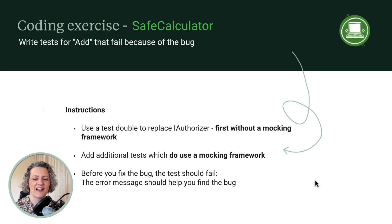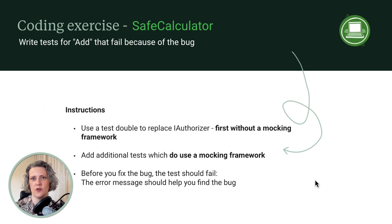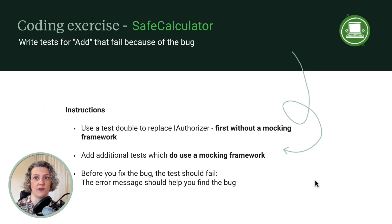Now it's your turn. I'd like you to do what I did — write some tests for SafeCalculator that fail because of the bug. To begin with, write tests like I did with a hand-coded test double. Then, using a mocking framework that you or someone on your team knows, write additional tests that do the same thing — find the same bug. With all of the tests, before you fix the bug, look at the error message and see if you can tell what the problem is just from the test failure message.